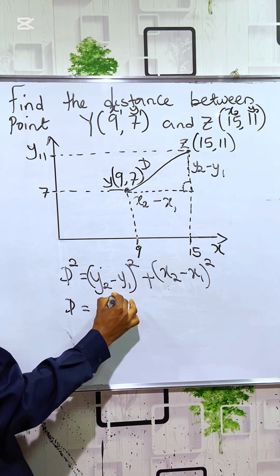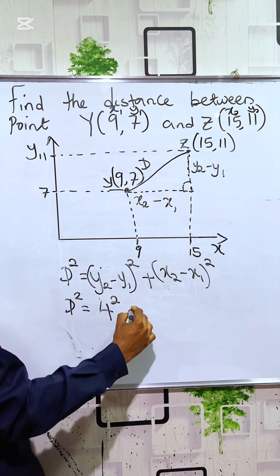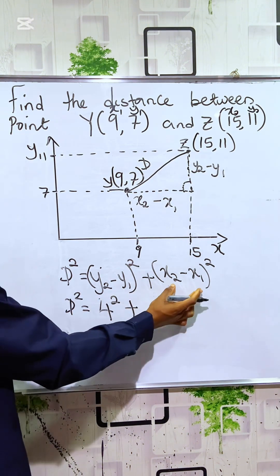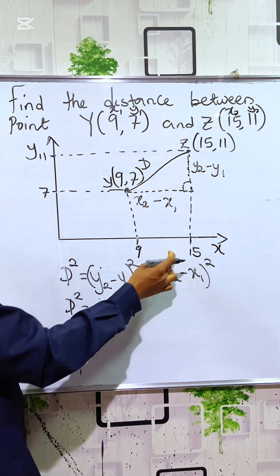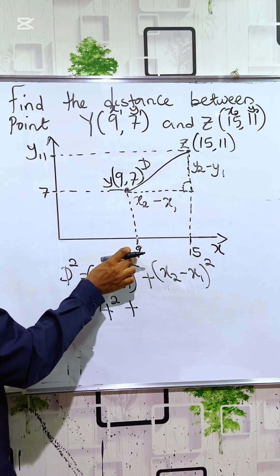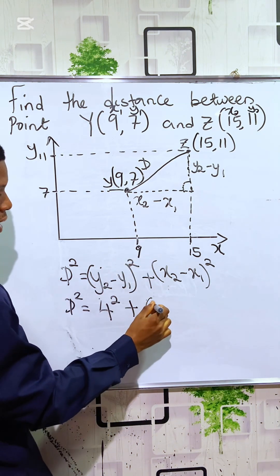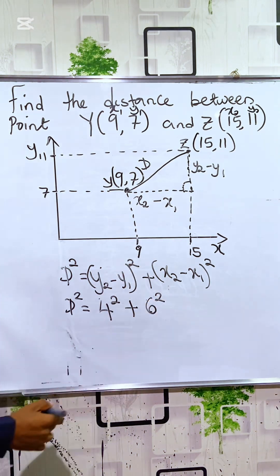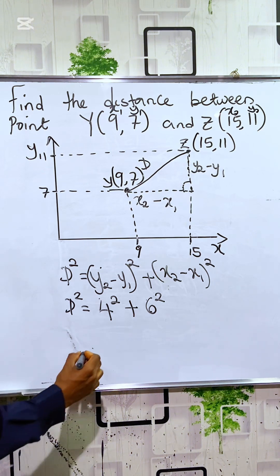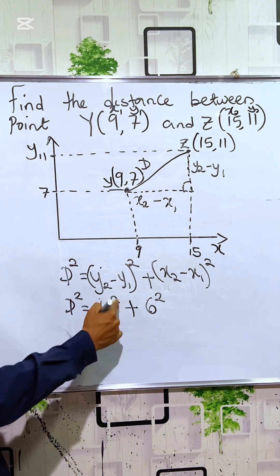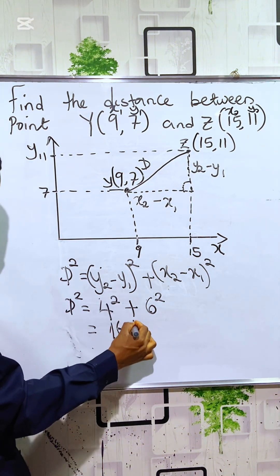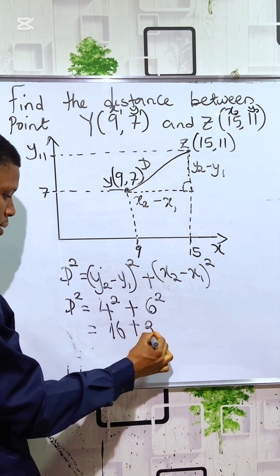what is X2 minus X1? 15 minus 9. 15 minus 9 is the same thing as 6. You have it as 6 squared. So you can now see that 4 squared is 16 plus 6 squared is 36.